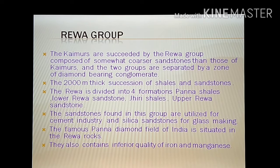The Kaimur is succeeded by the Rewa Group, composed of somewhat coarser sandstones than those of Kaimur. The two groups are separated by a zone of diamond-bearing conglomerate. This succession is 200 meters thick of shales and sandstone, divided into four formations: Panna shales, lower Rewa sandstone, Jhiri shales, and upper Rewa sandstone. The sandstones of this group are utilized for making cement, and the silica sandstone for making glass.